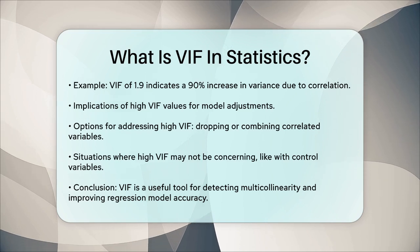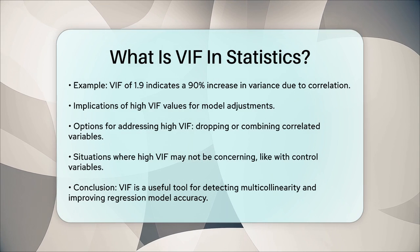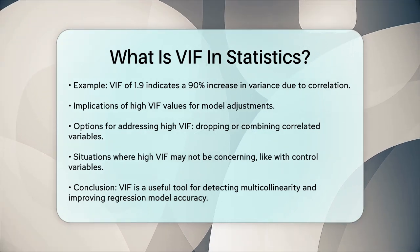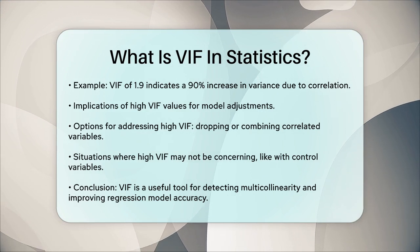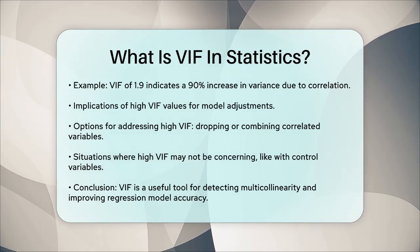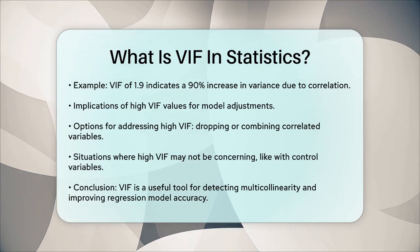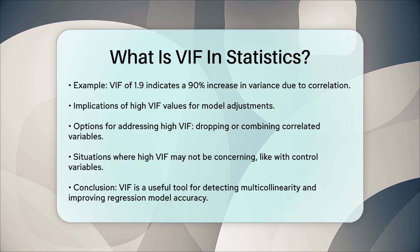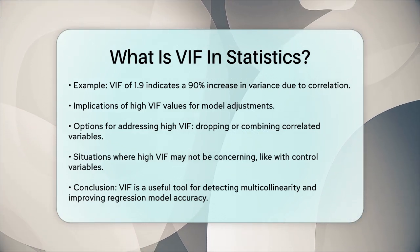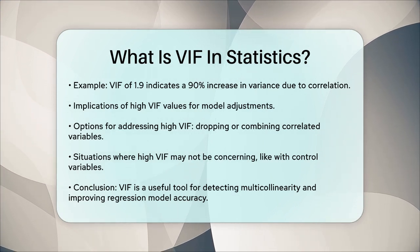However, there are cases where high VIFs aren't a concern, such as when the variables with high VIFs are control variables and the variables of interest do not have high VIFs. In summary, the VIF is a powerful tool to detect multicollinearity in your regression models. By understanding and managing these correlations, you can ensure your regression results are more accurate and reliable. So next time you're analyzing data, keep an eye on those VIF values to make sure your model is as robust as possible.